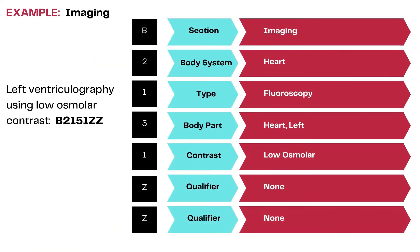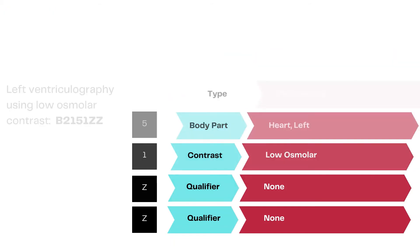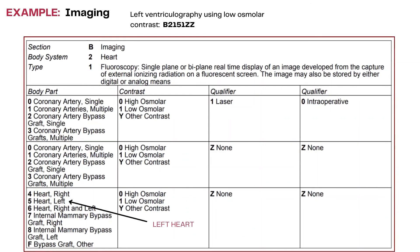Here is an example of coding left ventriculography using low osmolar contrast. The section is imaging, the body system is heart, the type is fluoroscopy, and the body part is left heart. The fifth character identifies the type of contrast as low osmolar, and the sixth and seventh characters are none for this particular procedure. This is the corresponding table for the left ventriculography.